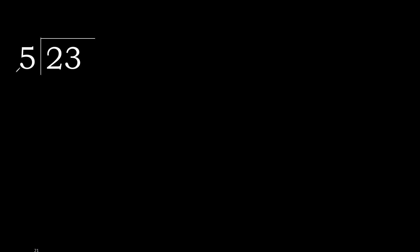23 divided by 5. 2 is less, therefore next: 23. 23 is not less, therefore with 23. 5 multiplied by which number is nearest to 23 but not greater?